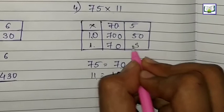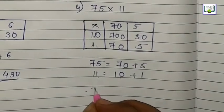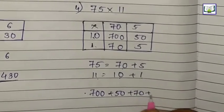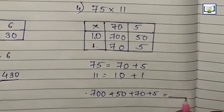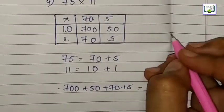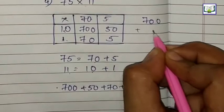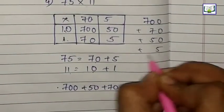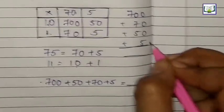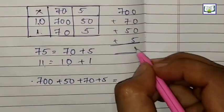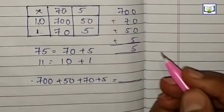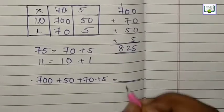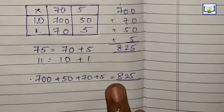Now we will do the addition: 700 plus 70 plus 50 plus 5. We can write it as 700 plus 70 plus 50 plus 5. So 5 as it is. 7 plus 5 becomes 12. 2 here, 1 carry. 7 plus 1 is 8. So the answer is 825.